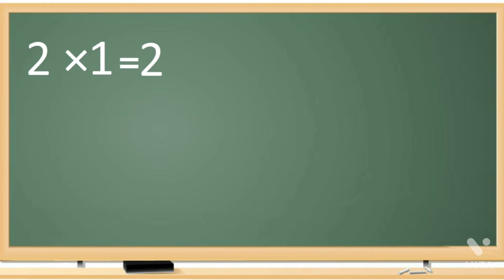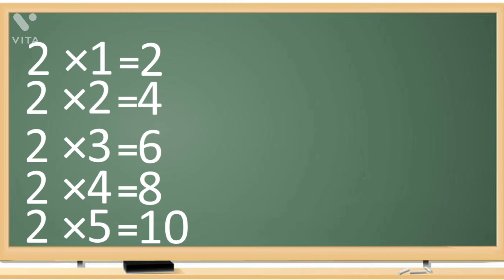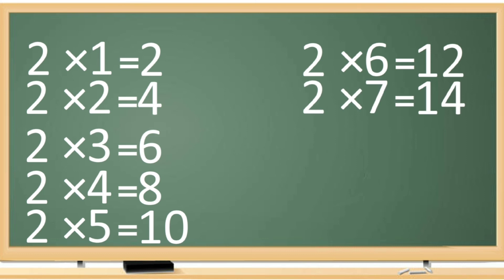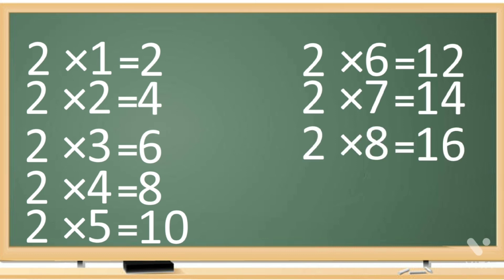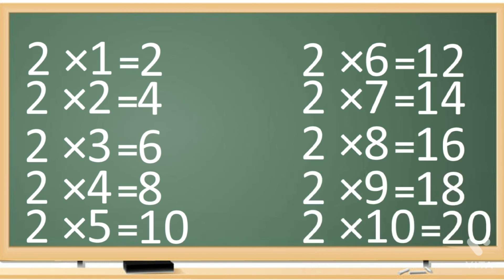2 ones are 2. 2 twos are 4. 2 threes are 6. 2 fours are 8. 2 fives are 10. 2 sixes are 12. 2 sevens are 14. 2 eights are 16. 2 nines are 18. 2 tens are 20.